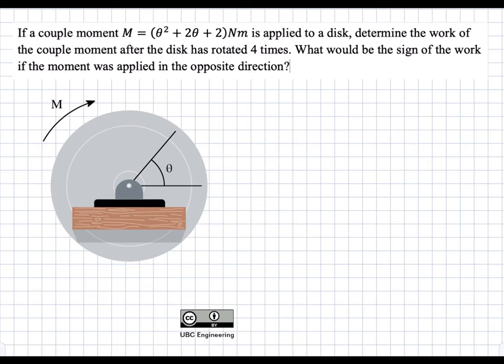This may seem complicated, but it's not. The work for a normal force is just the force times the distance, or the integral of F dx. With a moment, it's the integral of M dθ. So the infinitesimal amount of work dU equals M dθ.